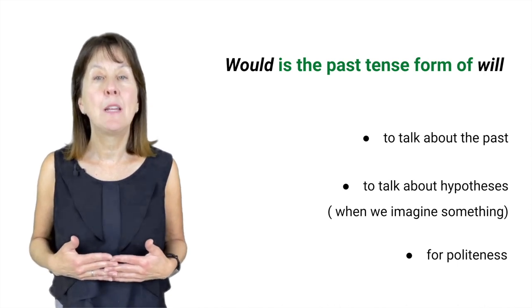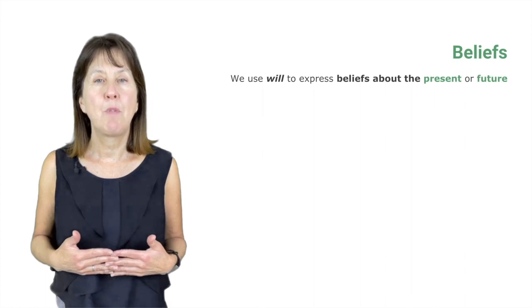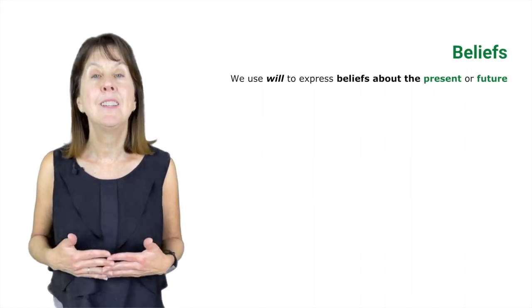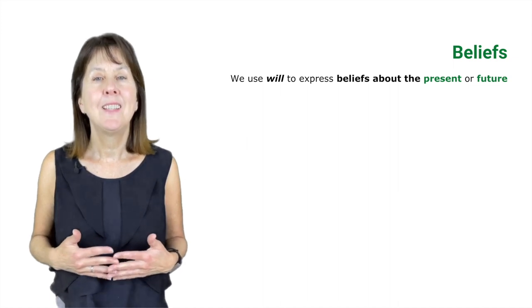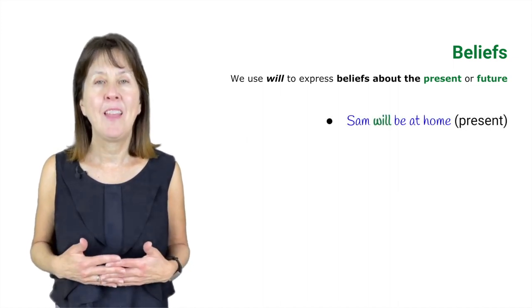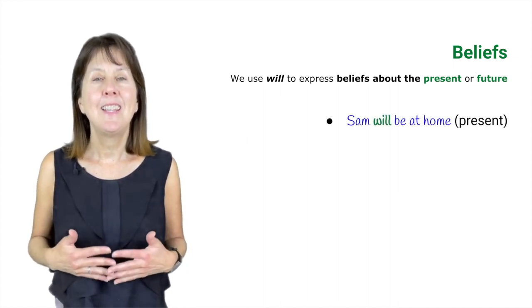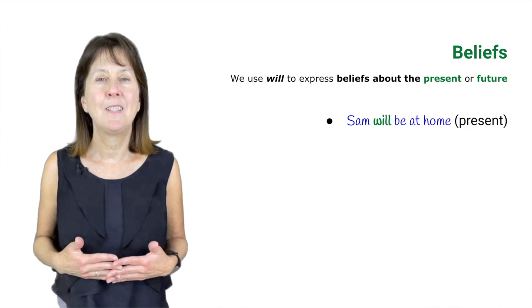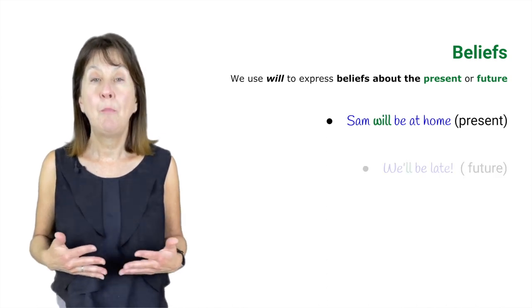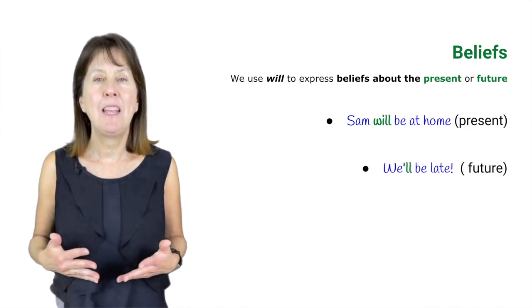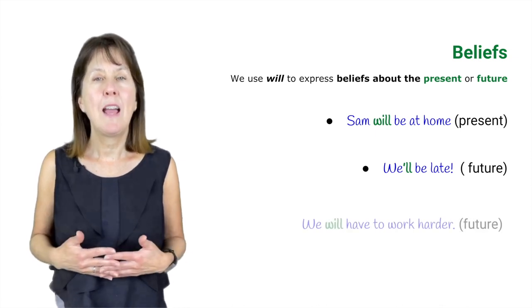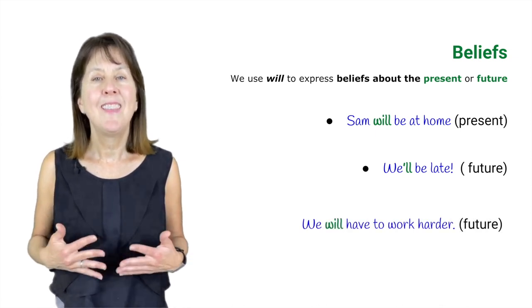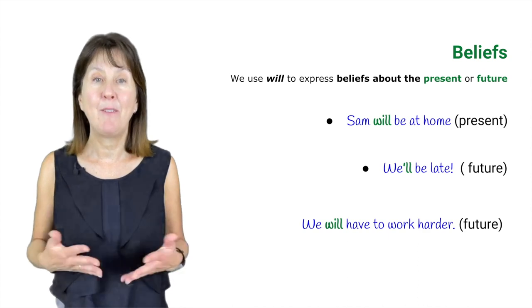So firstly let's look at beliefs. We use will to express beliefs about the present or the future. For example, 'Sam will be at home' — this is a belief about the present. Or 'I will be late' — this is a belief about the future. 'We will have to work harder' — again a belief about the future.